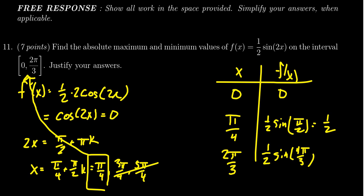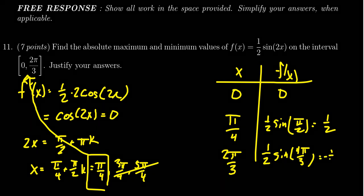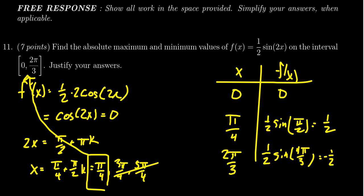So we get -(1/2) × sin(π/3), which is -(1/2) × (√3/2) = -√3/4 as this last value.